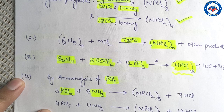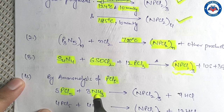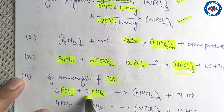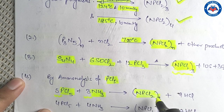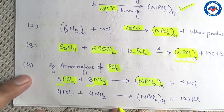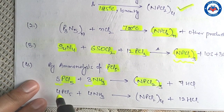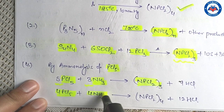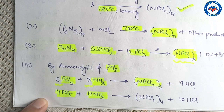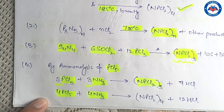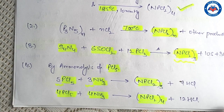In the ammonolysis method, phosphorus pentachloride is reacted with ammonia. Using a 5:3 ratio of PCl5 to ammonia gives the cyclic trimer, while using equal moles of phosphorus pentachloride and ammonia gives the cyclic tetramer.